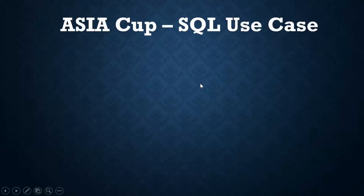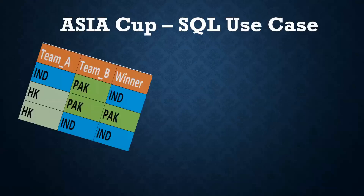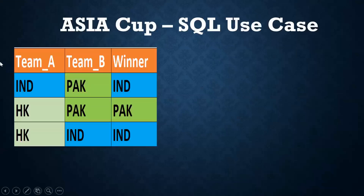Today we will see one SQL use case. I have one table with team A, team B, and winner columns. India versus Pakistan — India is the winner. Hong Kong versus Pakistan — Pakistan is the winner. Hong Kong versus India — India. This is an Asia Cup schedule with team A, team B, and winner.